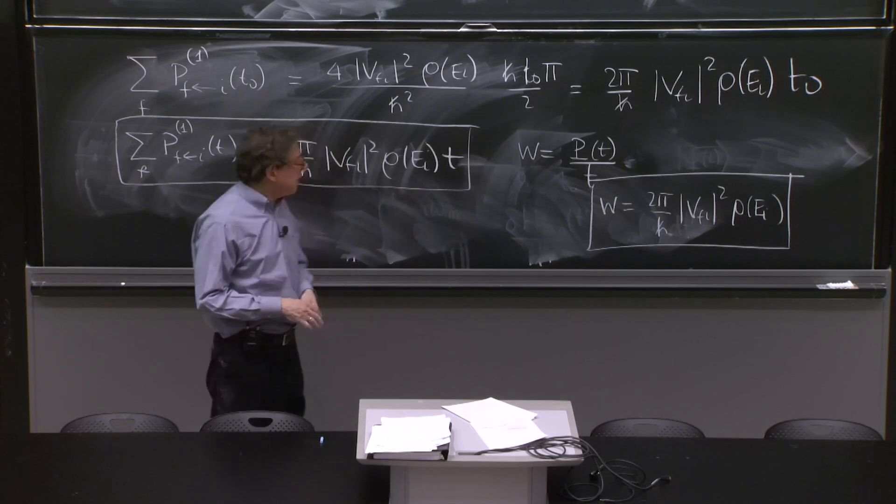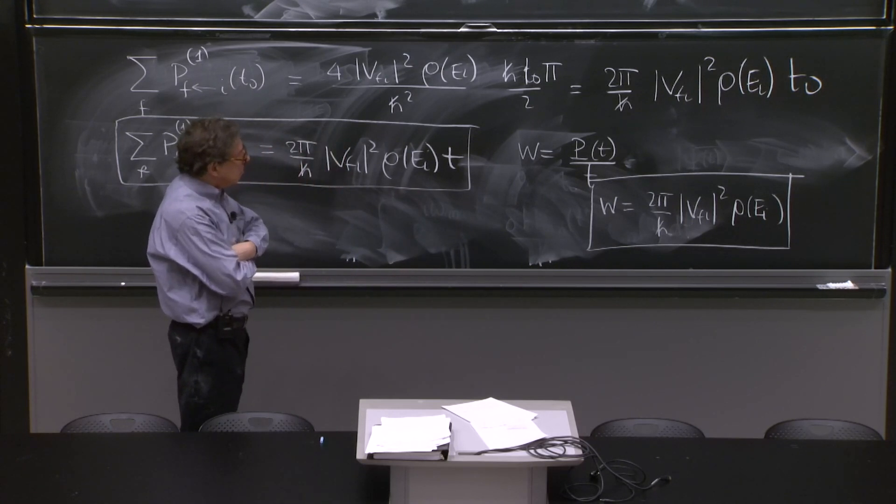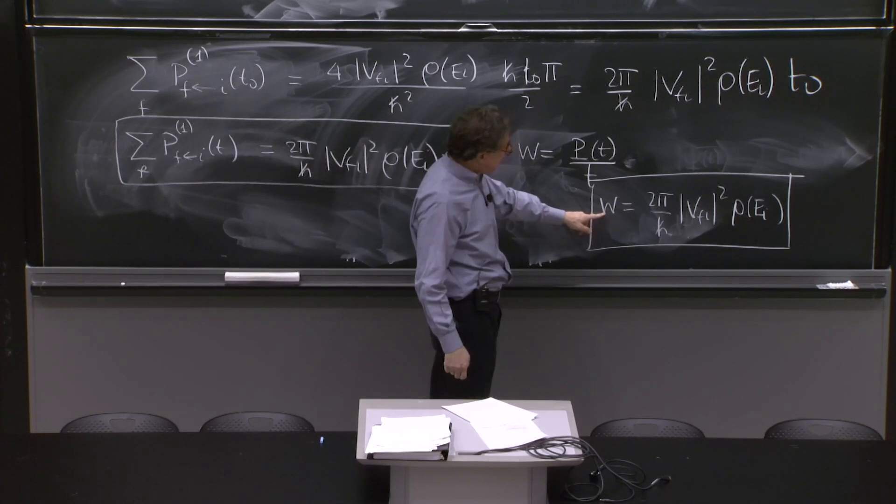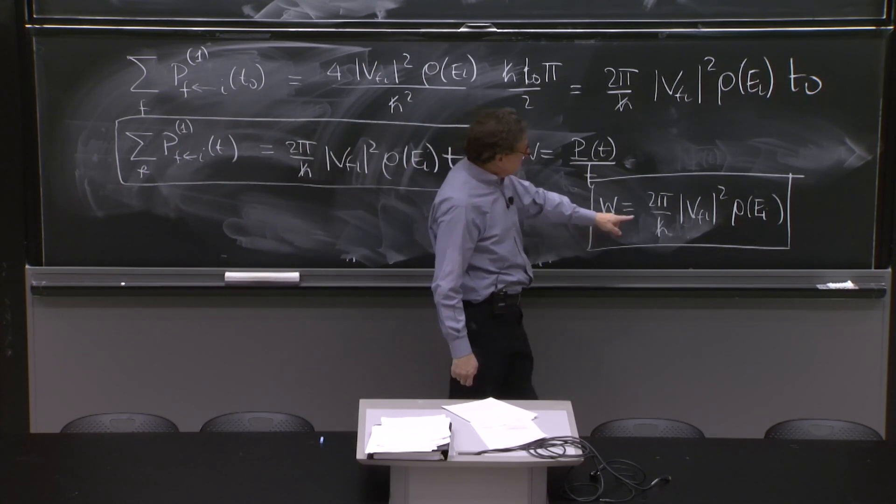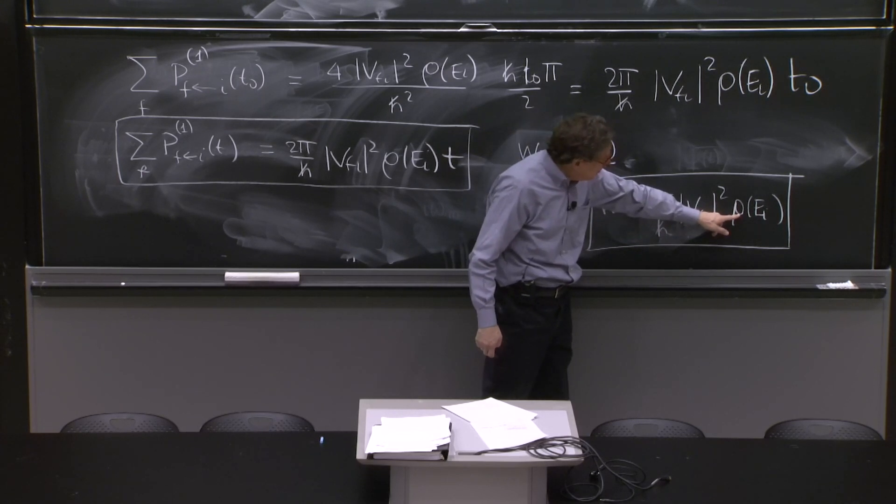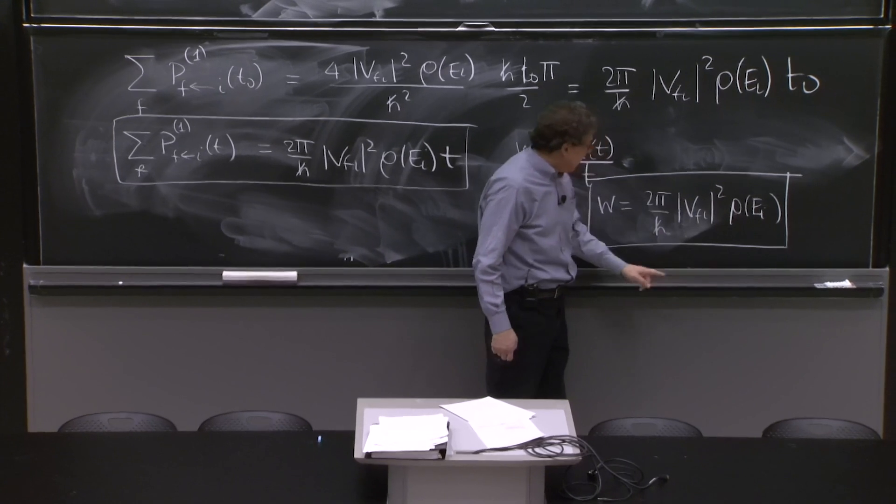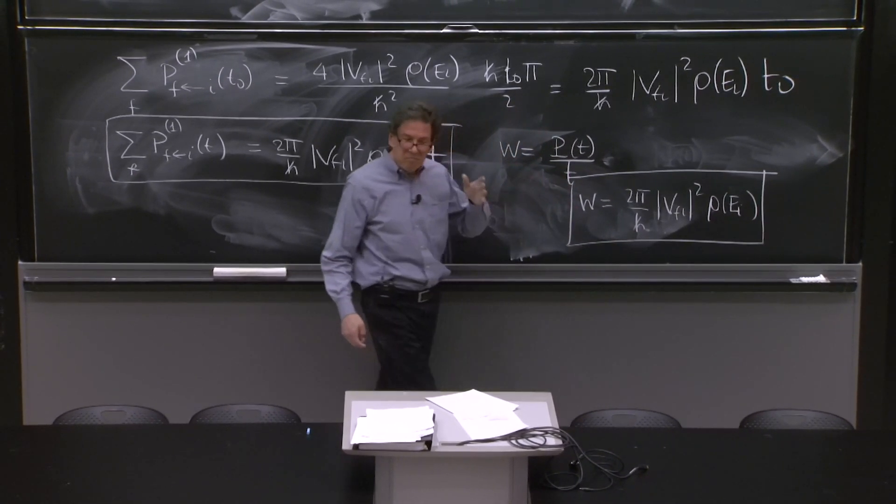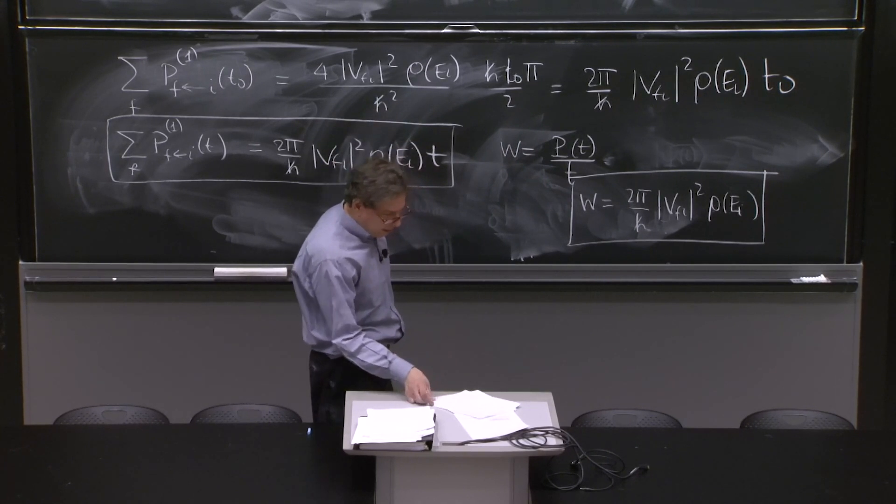So we have this formula. Let's look at a couple more things. Do units work out? Yes. This is transition per unit. This is 1 over time. This is energy squared. This is 1 over energy. And this is an h bar. This will give you 1 over time. So this thing goes well.